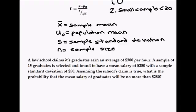I've got a question here. A law school claims its graduates earn an average of $300 an hour. We've got a sample of 15 graduates with a mean salary of $280. Standard deviation is given as 50. And we want to know the probability the mean salary of graduates will be no more than $280.